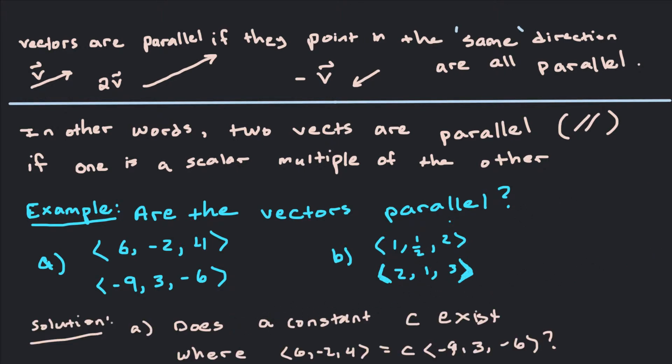Solution for part A would start off by saying okay, does a constant C exist where the first vector is equal to C times the second vector? If such a constant does exist then yes the vectors are parallel.